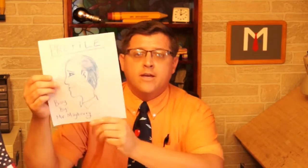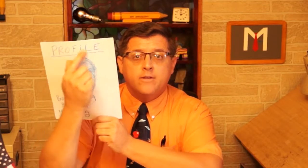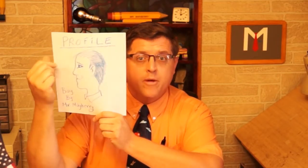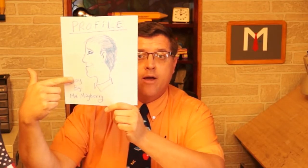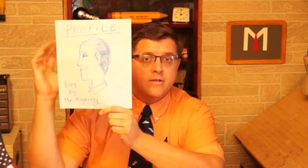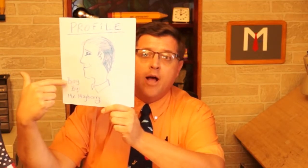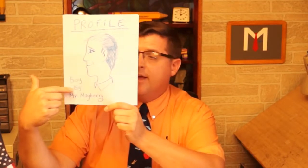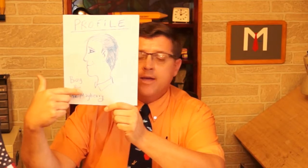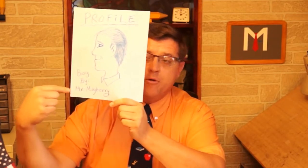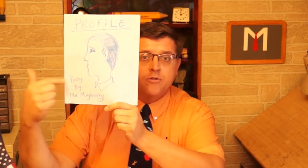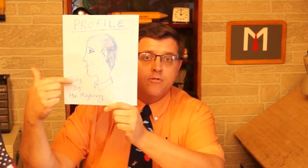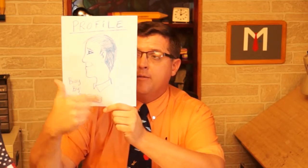Once you are done, we're going to write our name at the top of the paper, and I'll write the word 'profile' at the top of the paper. Then at the bottom, after we're done, we're going to write whoever the picture is of — we're going to put their name right here. I put 'boy' on mine, and then you're going to put 'by,' B-Y, and then your name. I put Mr. Mayberry, because I drew this picture. So this is 'boy by Mr. Mayberry.' You'll write the person's name that you drew, 'by,' and then your name at the bottom.